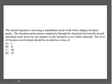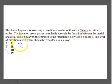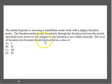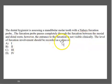The second question: the dental hygienist is assessing a mandibular molar tooth with a Nabers furcation probe — for assessing furcation, we always use the Nabers probe, which is curved. The furcation probe passes completely through the furcation between the mesial and distal roots; however, the entrance to the furcation is not visible clinically. What class of furcation involvement should be recorded — class 1, 2, 3, or 4?